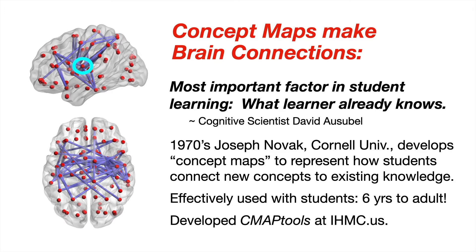The concept map was designed to make these kinds of brain connections, like the broad roots. Cognitive scientist David Ausubel says the most important factor in student learning is what the student already knows that they can connect to. If they don't know much, they can't connect things to things they don't know.